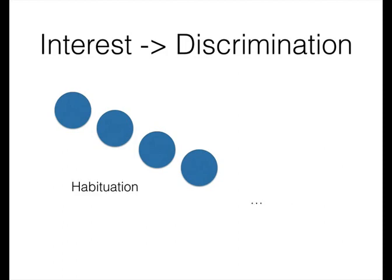Then after they reach some preset criterion for boredom, we spring a square on them. If they're more interested in the square, that means they can tell the difference between the circle and the square. Because if they just saw it as another circle, they wouldn't regain interest. The technical term for this regaining of interest is dishabituation.